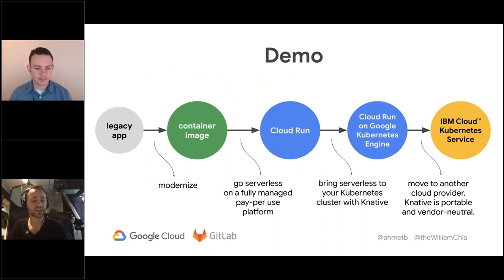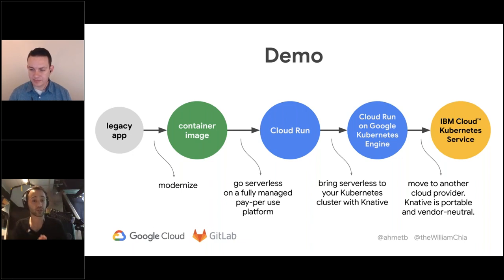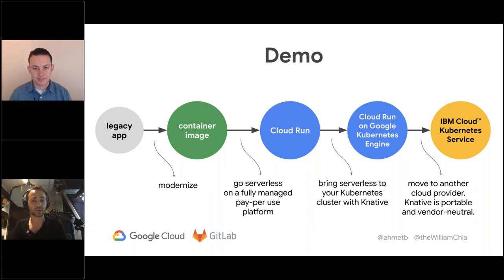I'm going to finish my presentation with a demo and then hand it back to William. In this demo I'll walk through a legacy application — explaining why it's legacy and not a Greenfield application — then explain how to put it in a container image using Docker, deploy it to Cloud Run, and show how it runs with HTTPS fully managed by Google Cloud and scales automatically. Then I'll take it from Cloud Run to a Kubernetes cluster I already manage, and then to another cloud provider, just to show that Knative is portable and vendor neutral.